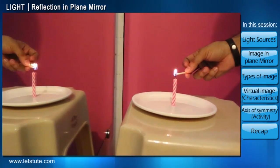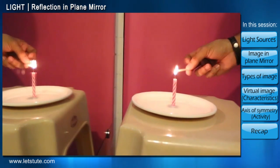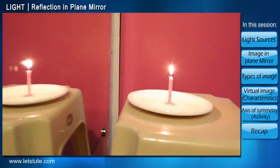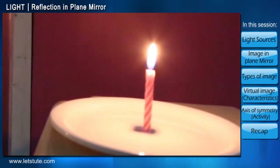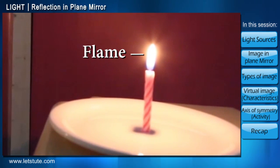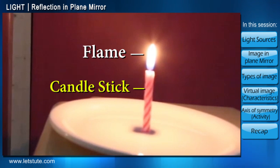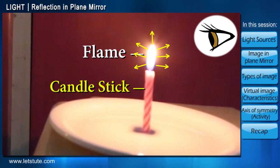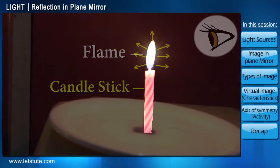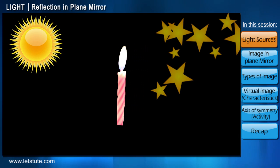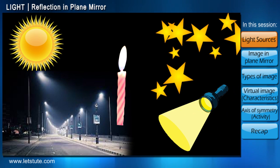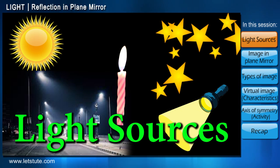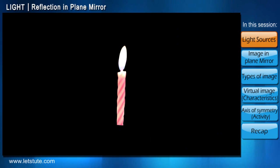Like a burning candle, for instance. Now since the candle is burning, we have two things to consider here: the flame and the candlestick. The candle flame produces its own light, so it is referred to as a light source. The Sun, the stars, a street lamp, or a torch light are all examples of light sources.